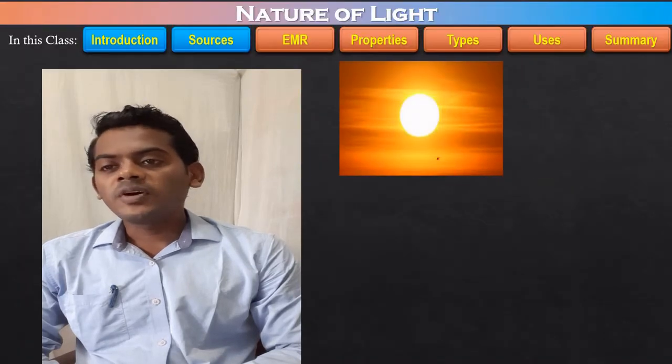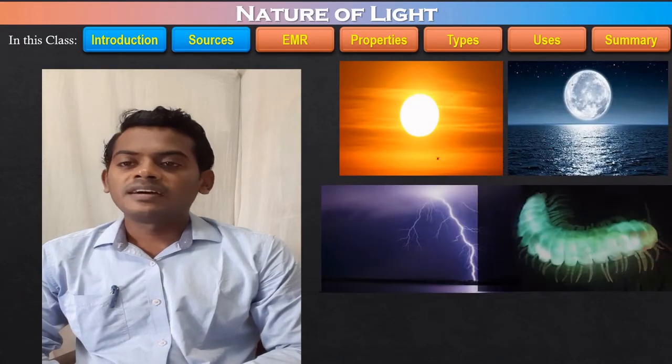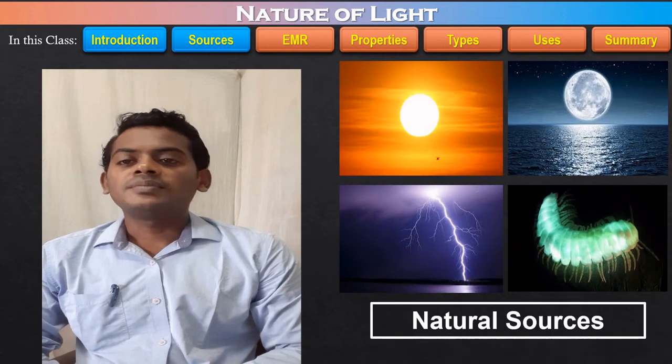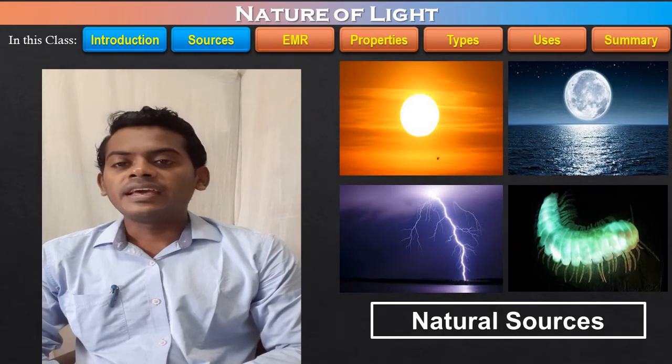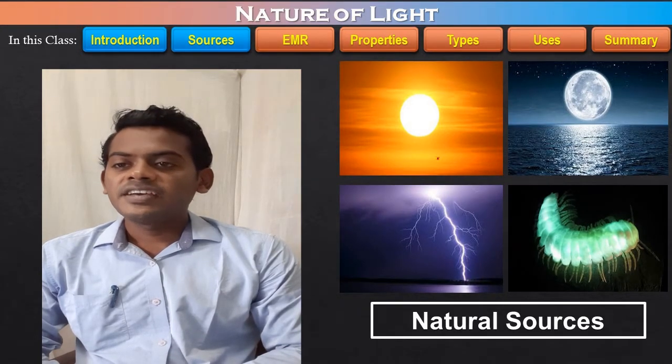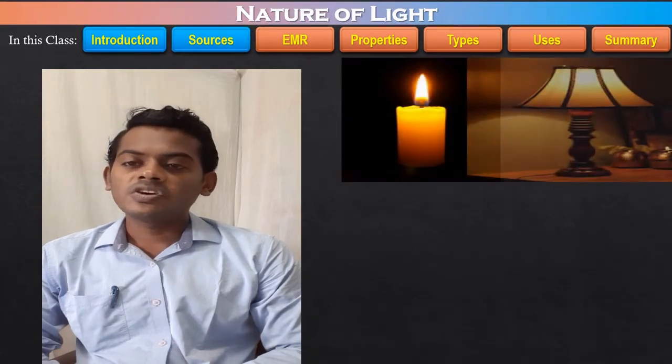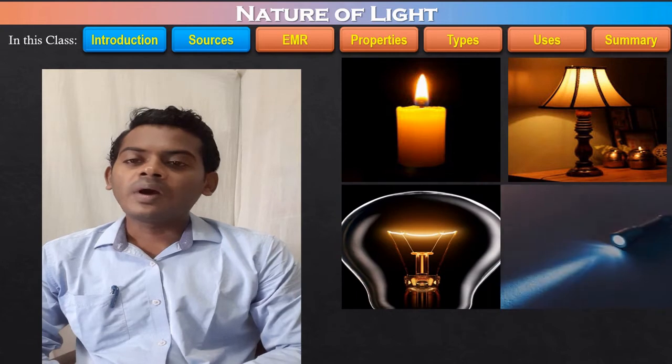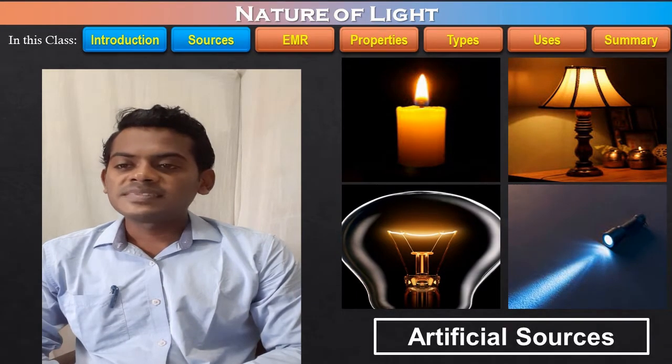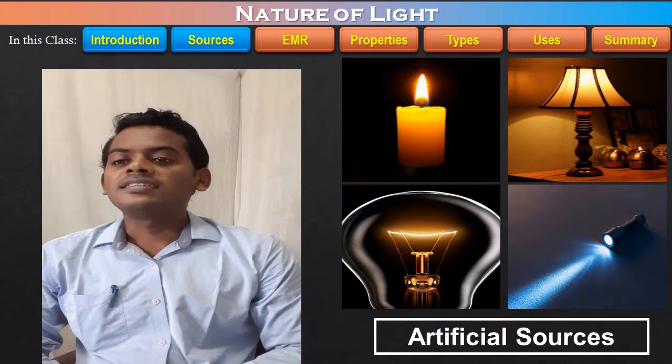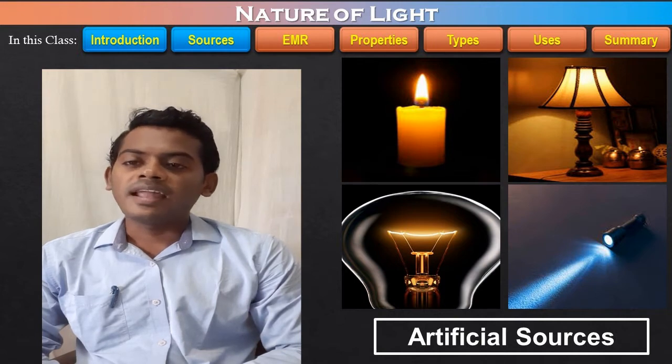There are two types of light sources. Like the sun, the moon, the lightning and certain types of insects, fishes are all examples of natural sources of light. While a candle flame, lamps and light fixtures are the artificial sources of light.